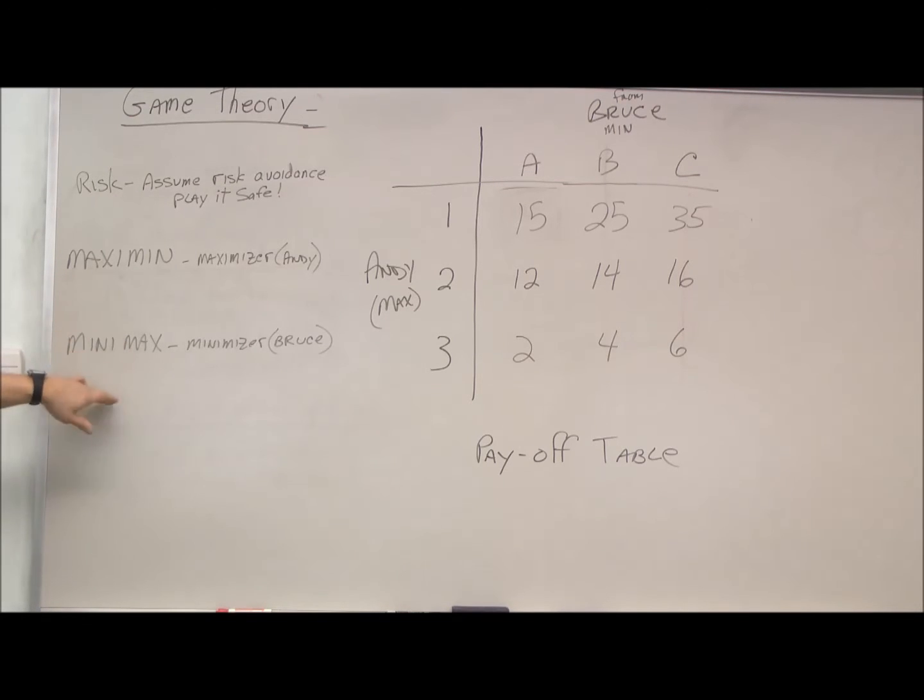So with that, the two players have different strategies. The maximizer, which is Andy, tries the maxi-min strategy, and the minimizer, which is Bruce, tries the mini-max approach.